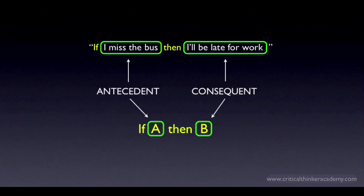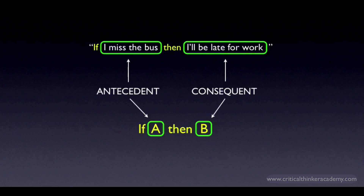They're also used to identify the most common logical fallacies associated with conditional arguments. One of these fallacies, for example, is called affirming the consequent. You commit this fallacy when you're given a conditional like this and assume, from the fact that I was late for work, that I must have missed the bus. You're affirming the consequent and trying to infer the antecedent. This is an invalid inference, and the name for the fallacy — which you'll find in any logic or critical thinking textbook — is affirming the consequent.